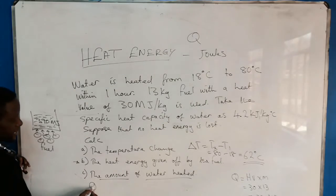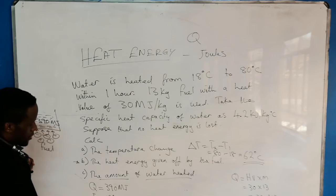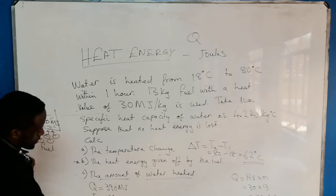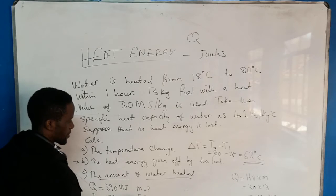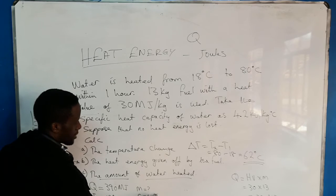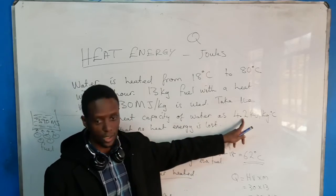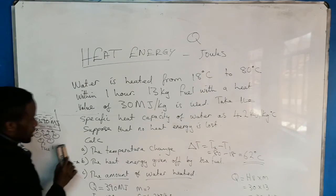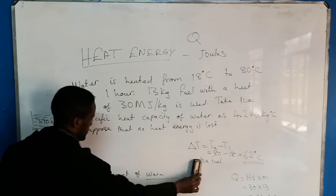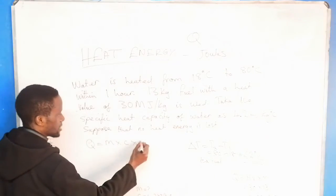So we have our heat energy given to the water, which is 390 megajoules. We have T1 for the water, which is 18 degrees Celsius, and T2, which is 80 degrees Celsius. They ask us what is the mass of the water. We have the specific heat capacity for water, which is 4.2 kilojoules per kg degree Celsius. Our formula will still be the same: heat energy equals mass times specific heat capacity times (T2 minus T1).